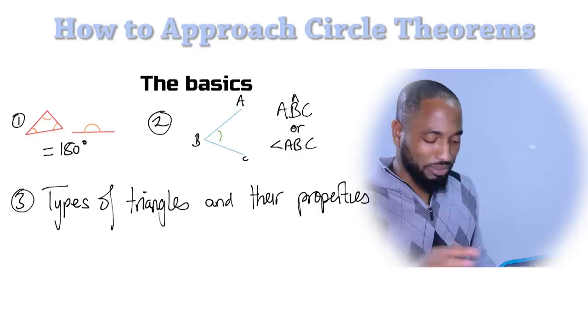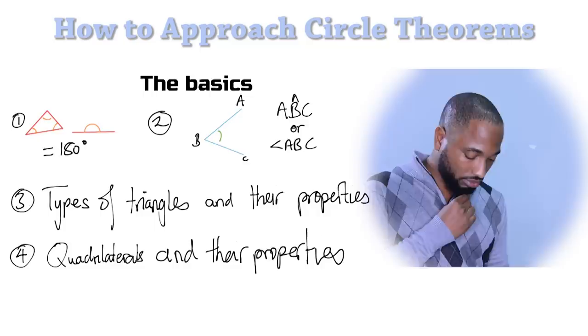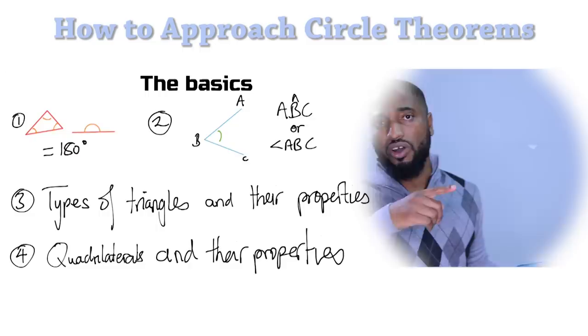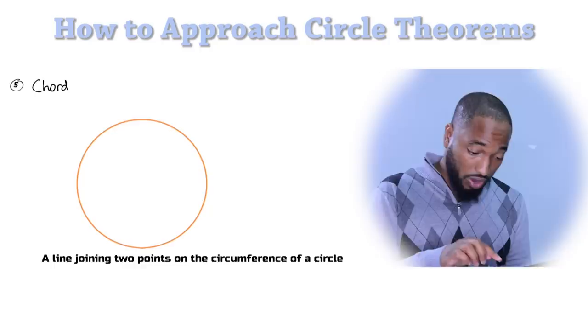Number three in the basics, you need to know the types of triangles and their properties. Isosceles triangle, equilaterals. This is the basics. I'm just making sure that you know this, but I expect most of the students out there watching to know that. If you don't know that, as I say again, you need to go back and watch some CSEC videos, man. So number four, quadrilaterals and their properties. Quadrilaterals and their properties, you need to know that. Especially the one where they say all the angles in a quadrilateral add up to 360 degrees.